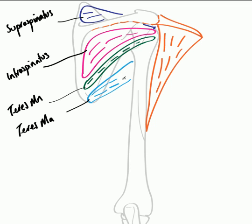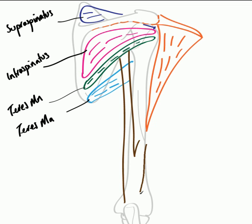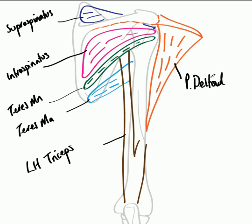The long head of triceps runs over teres major as it heads towards the infraglenoid tubercle in the superior lateral region. Here we can draw in the long head of triceps — triceps has three heads as its name suggests but we'll just draw in the long head here. So here we have the long head of triceps and the posterior fibres of deltoid. Now we've drawn in the long head of triceps, we can outline the quadrangular space.